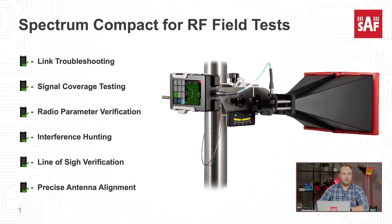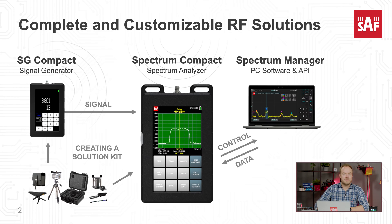In today's webinar we will have a quick theory on what is the radio line of sight, following with the link calculations to check the theoretical line of sight availability. Then we will go in the field to do the actual line of sight verification. Following that we will have the results for the summary and report in Spectrum Manager PC software. SAF Technica has a test and measurement product line for RF field engineers consisting of RF spectrum analyzers and signal generators, demonstrated here for line of sight verification tasks in point-to-point microwave networks.